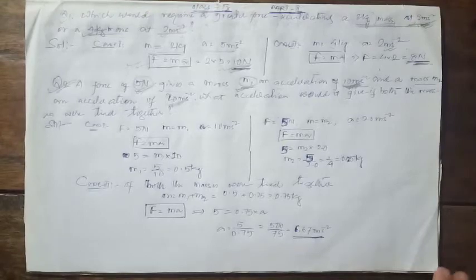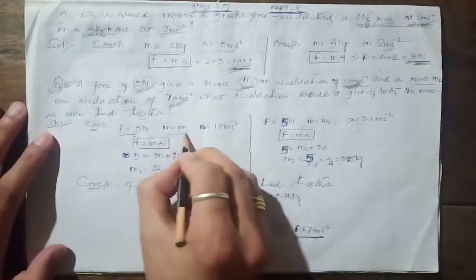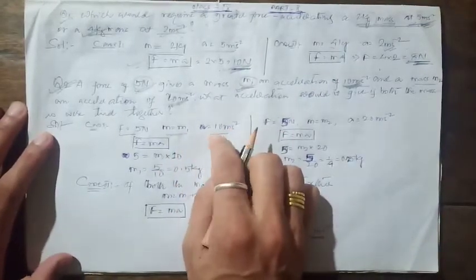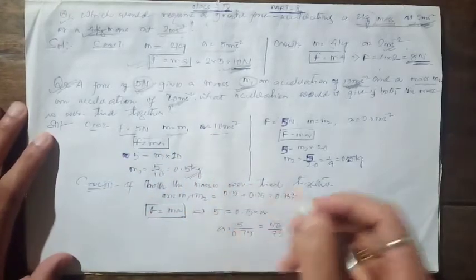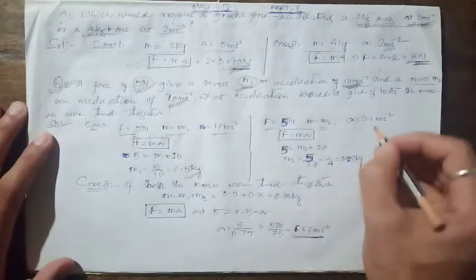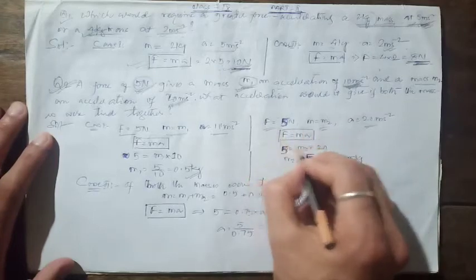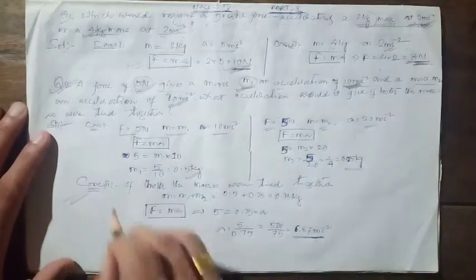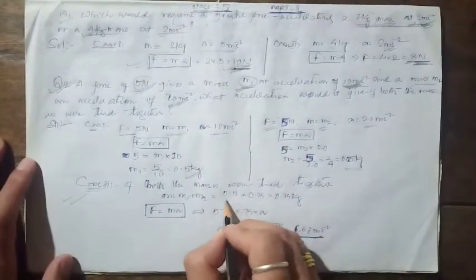First we find the individual masses. In the first case: F = 5 N, acceleration = 10 m/s², so m1 = 0.5 kg. In the second case: same force, acceleration = 20 m/s², so m2 = 0.25 kg.